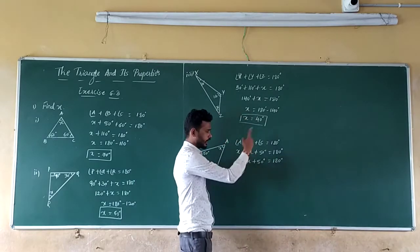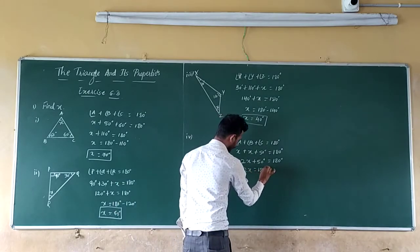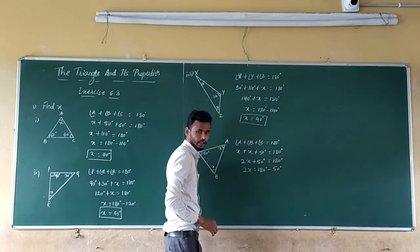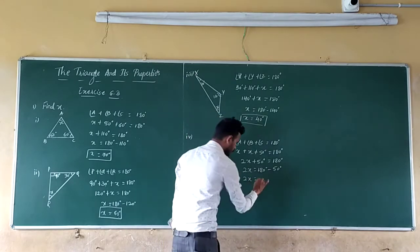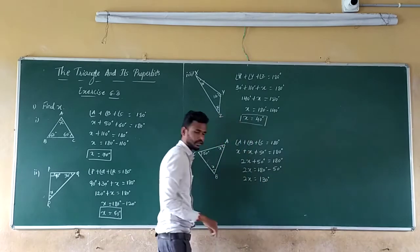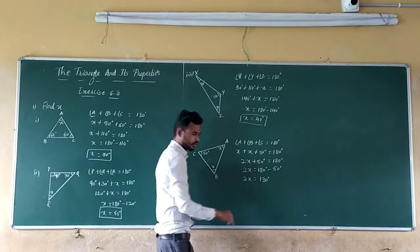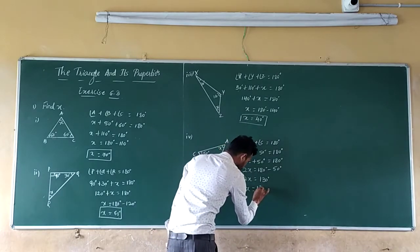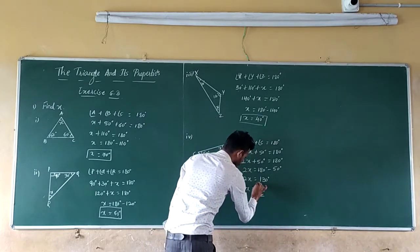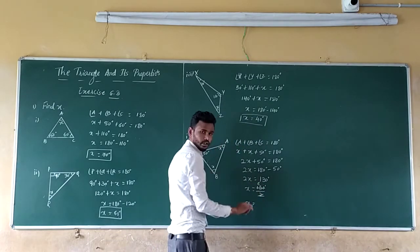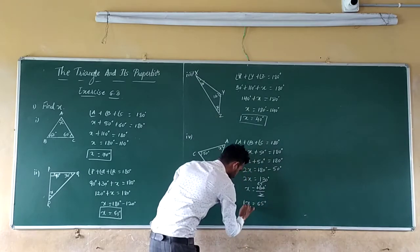So now here, 50 is positive — take it to the RHS and it will become minus. So 2X is equal to 180 degrees minus 50 degrees, which is 130 degrees. So now here 2 is multiplied with X — take it to the RHS and it will become division. So X is equal to 130 divided by 2, which equals 65 degrees.